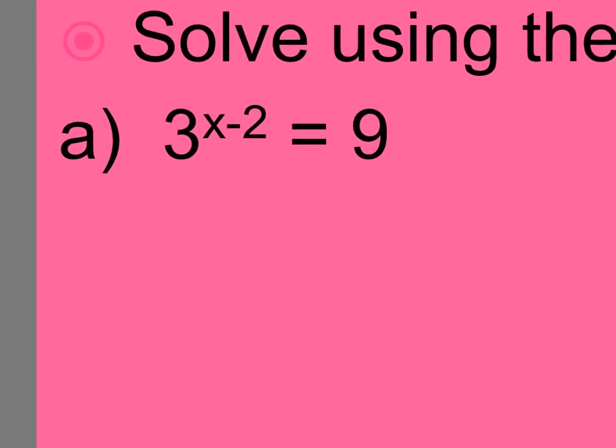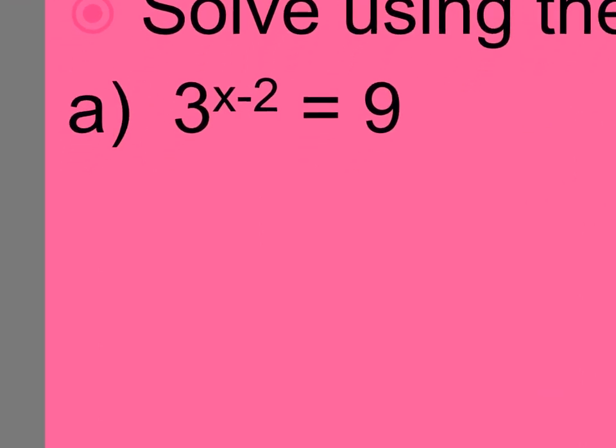So this literally says solve using the one-to-one property. If I look at A, I need to change them so they have the same base, right? Do you change the smaller to become big or the bigger to become small? Bigger to become small. So I rewrite 9 as 3 squared. Good.